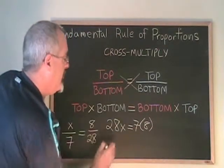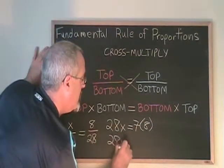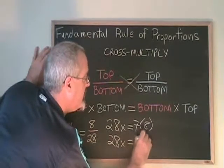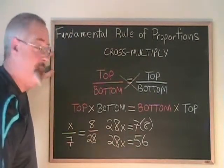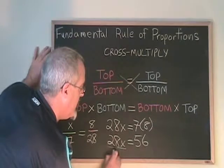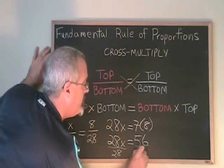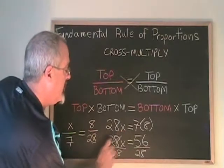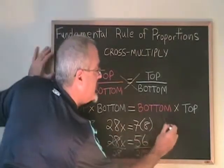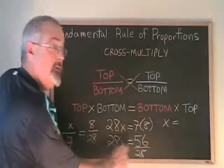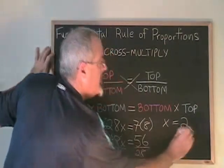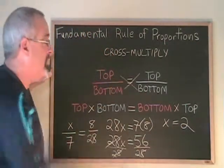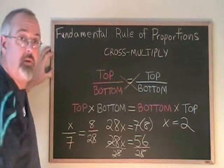Simplifying, I'll start by multiplying the 7 and the 8, and I get 56. Then, if I divide both sides by 28, I can cross out these. My x is isolated, and it's equal to 56 divided by 28, which is 2. We can verify that this is correct by plugging the 2 into the original proportion.